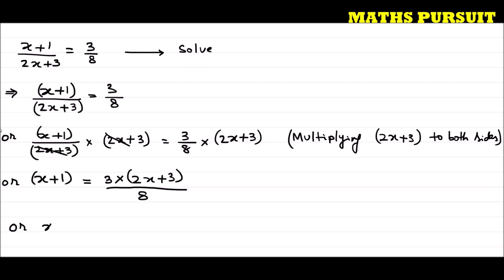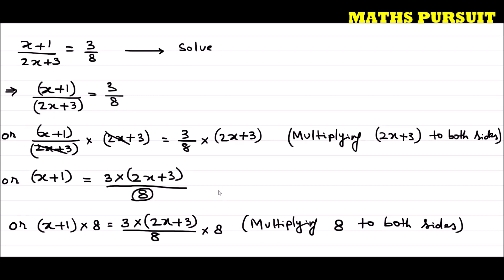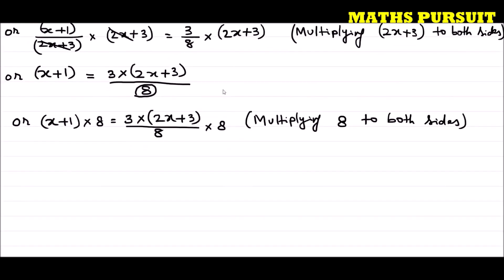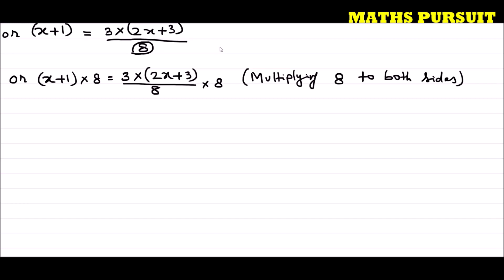Or I can write x plus 1 into 8 is equal to 3 into 2x plus 3 divided by 8, into 8. I have multiplied 8 to both sides. Why? I want to eliminate this 8 from the denominator. If I am doing something to one side of the equation, I should do the same thing to the other side.